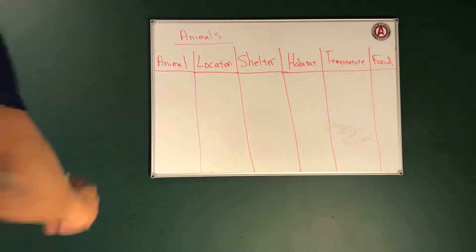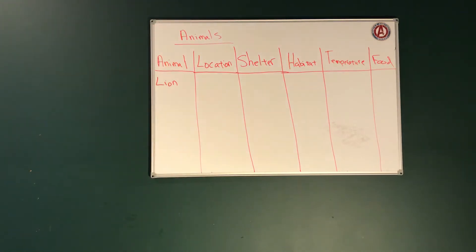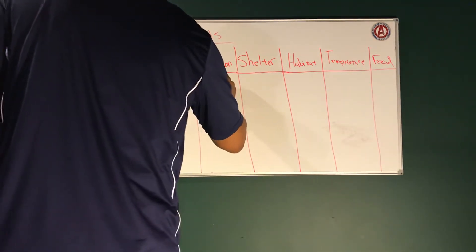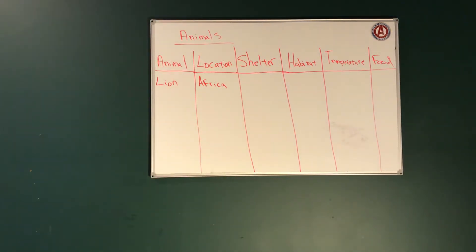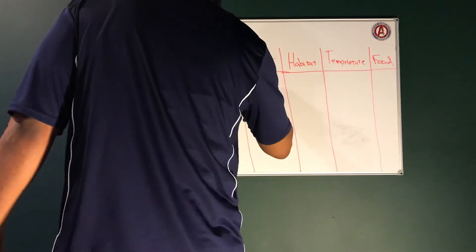The first animal we're going to look at is a lion. I want you guys to think about the location of a lion. Where do you think a lion is from? Lions are from Africa. So the location for a lion would be Africa. Think about the shelter for a lion — shelter is a temporary living area. So shelter for a lion would be shady trees.